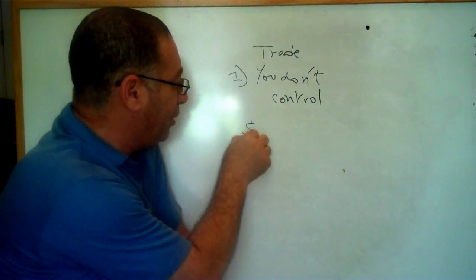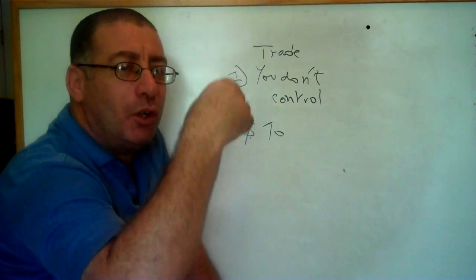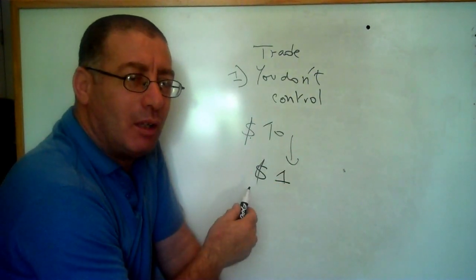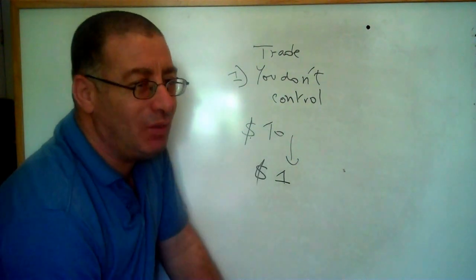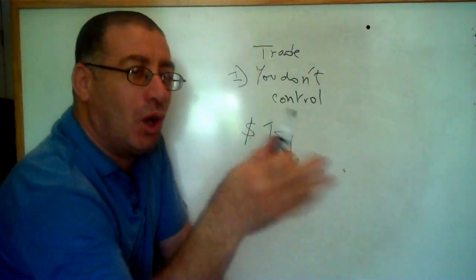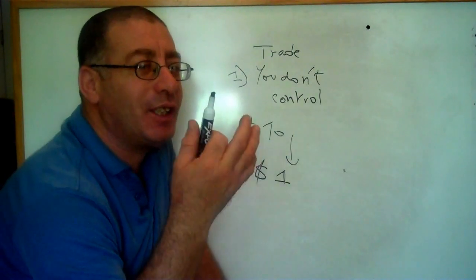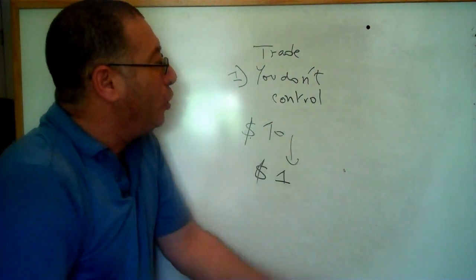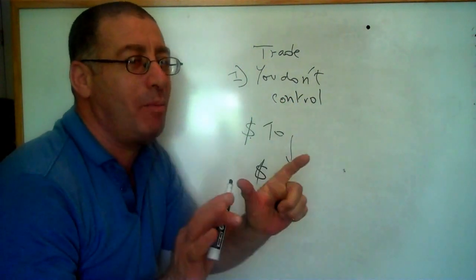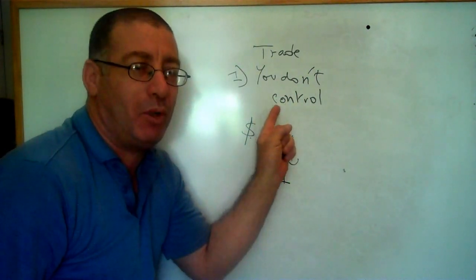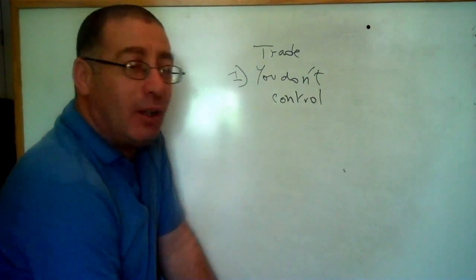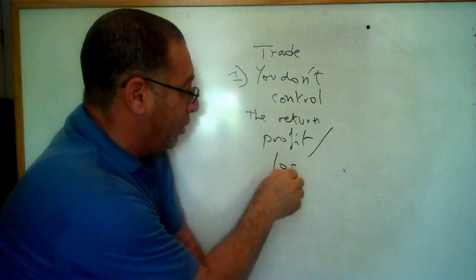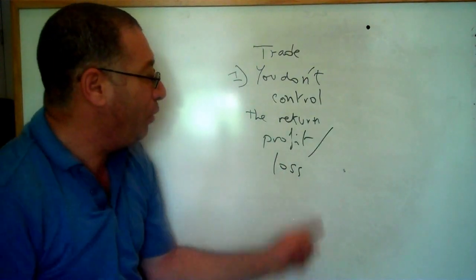For example, you buy a stock at ten dollars. Tomorrow there is bad news about the company or someone is shorting the stock. You come in the morning and find it's one dollar - you can't believe it. You've lost almost all your money. You thought you were sure about what would happen, but you don't control the return - whether it's profit or loss.